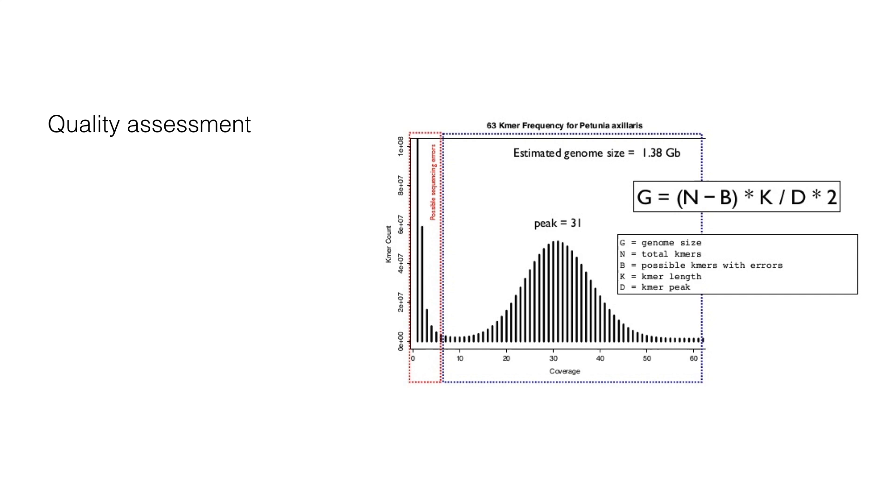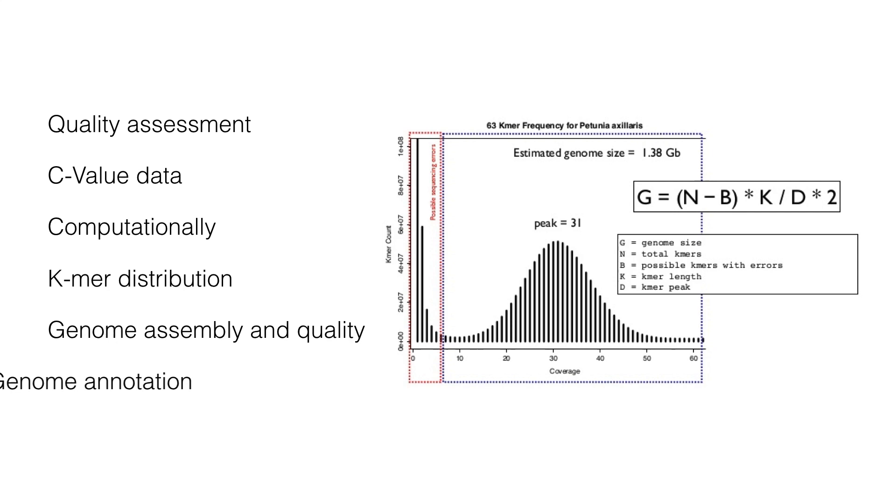Quality assessment has also led to some estimates that can be made about the genome itself. Traditionally, the genome size was estimated from C-value data, which is the amount of DNA in picograms contained within a haploid nucleus. Computationally, the genome size can also be estimated from the K-mer distribution using the formula shown. Once we are finished with the genome assembly and quality, we can move on to genome annotation, which is going to be the topic of our next lecture.